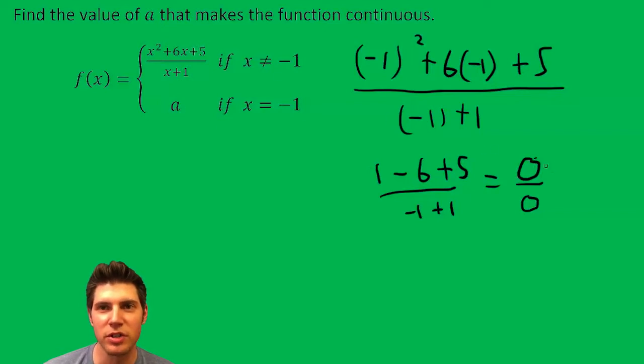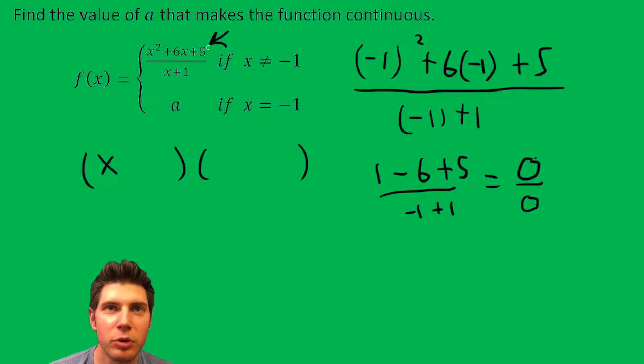So what's probably happening, usually if you see zero over zero, that means something might cancel. So we need to factor this top thing. So we want two numbers that multiply to five and add to six.